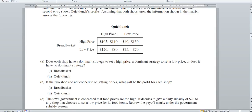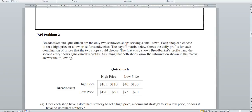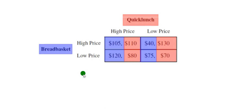I have color-coded this because I think it makes it easier. The profits for Quick Lunch are in red, and the profits for Bread Basket are in blue. The problem states that the first entry shows Bread Basket's profits and the second entry shows Quick Lunch's profits. So when we want to determine dominant strategy, we're comparing the blue with the blue and the red with the red.